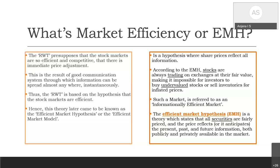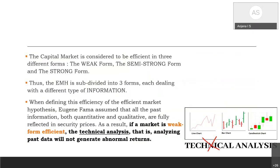The Efficient Market Hypothesis states that all securities are fairly priced and all information available in the market is reflected in stock prices. Investors are rational. The information can include past, present, or future information, and it can be publicly or privately available. These are the major principles of what constitutes an efficient market.